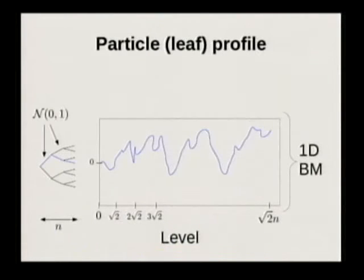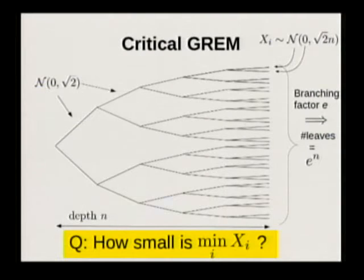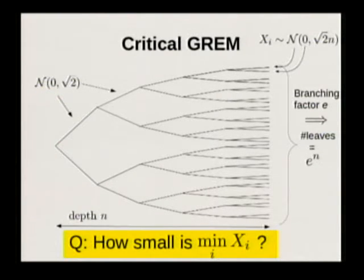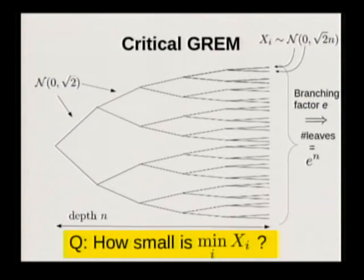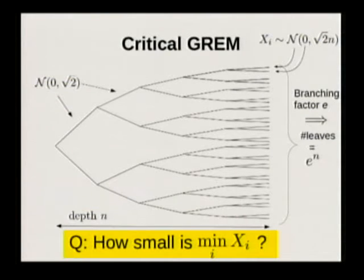So to each leaf you have associated a normal random variable with variance square root of 2n. The question you ask is how small is the minimum value you see on all the leaves. This choice of variance and branching factor makes the formulas somewhat nicer; the phenomena are exactly the same. So what you have here is a correlated field of Gaussian random variables with positive correlations, which means the minimum might be bigger compared to the independent case — the correlations cause the field not to be able to go as low as it otherwise might.